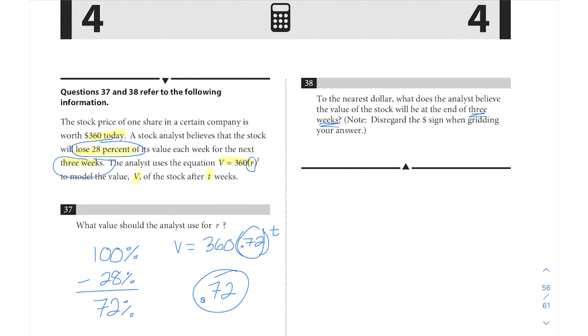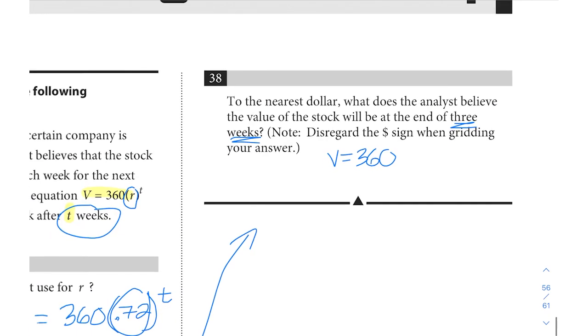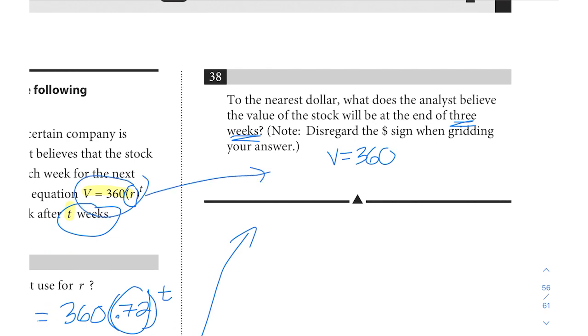Let's take a look at 38. To the nearest dollar, what does the analyst believe that the value of the stock will be at the end of three weeks? So it's the same value that they gave us in the original setup and they tell us that t represents the weeks.